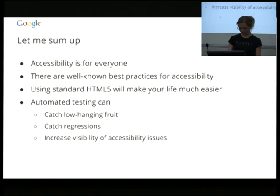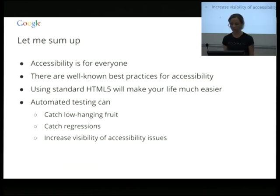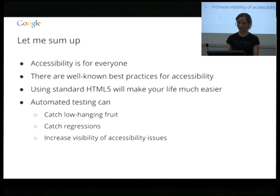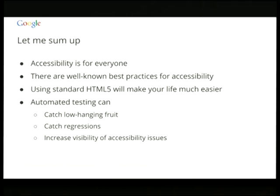To sum up: accessibility is for everyone — for me under certain circumstances, for people who are temporarily disabled, permanently disabled, people who are just in a hurry, people who don't like small click targets and so on. There are a bunch of well-known practices for accessibility that are documented and pretty easy to find. Using standard HTML5 will make your life much easier. And automated testing can catch low-hanging fruit, catch regressions, and increase visibility of accessibility issues.